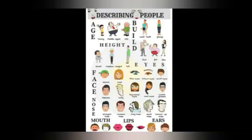Next one — appearance. By appearance, we can also describe people. Like age, height, build, face, nose, mouth, lips, ears, and eyes. We can describe these things too.